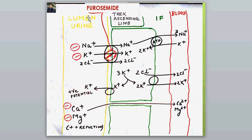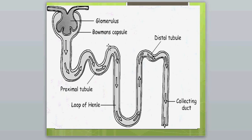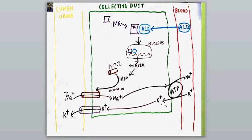Ultimately, the effect of furosemide is loss of sodium, loss of potassium, loss of chloride, loss of calcium, and loss of magnesium. The sodium that is not absorbed from the thick ascending limb travels with the fluid flow and reaches the collecting duct, where the main problem arises.